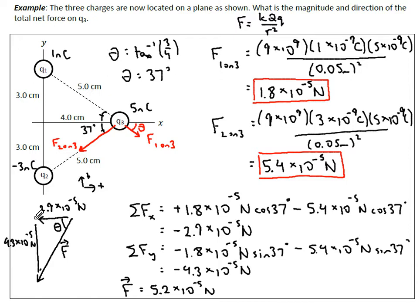We do inverse tan of 4.3 divided by 2.9. I'm not plugging in the 10 to the negative 5 into my calculator because my resultant vector is also going to be 10 to the negative 5. When I do inverse tan, 10 to the negative 5 cancels out. Inverse tan 4.3 divided by 2.9 gives us 56 degrees south of west.